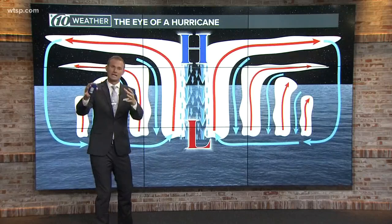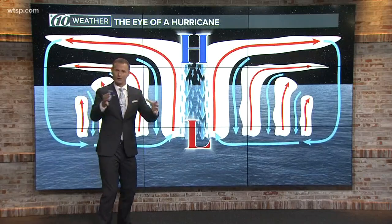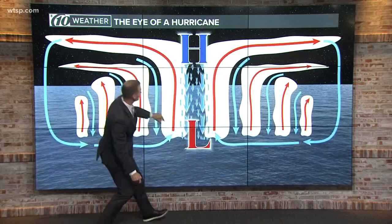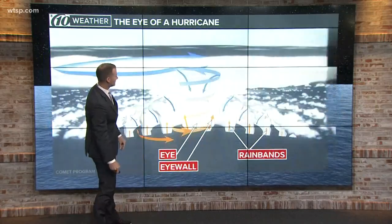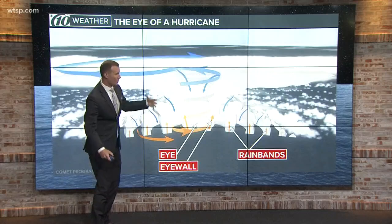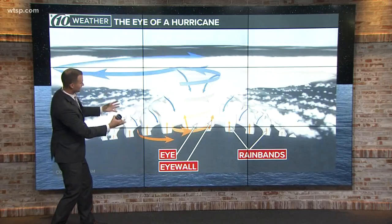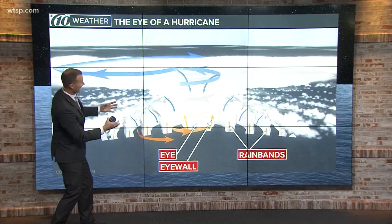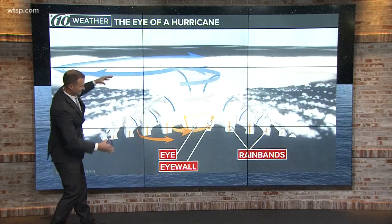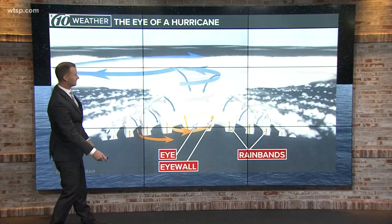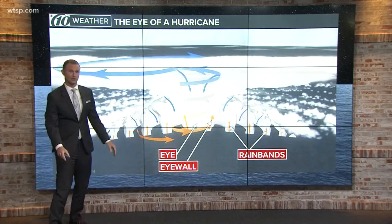We've talked about this before — things flow from high to low pressure. So you have that sinking motion in the atmosphere, and that's what ultimately creates that well-defined eye and what would essentially be a very strong hurricane.